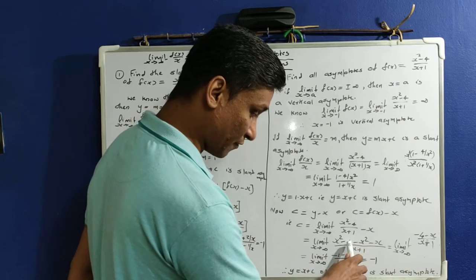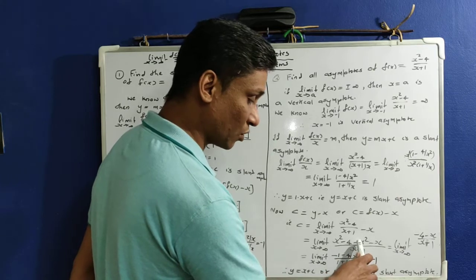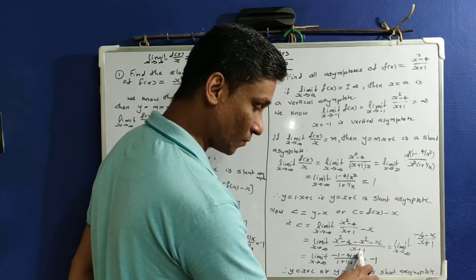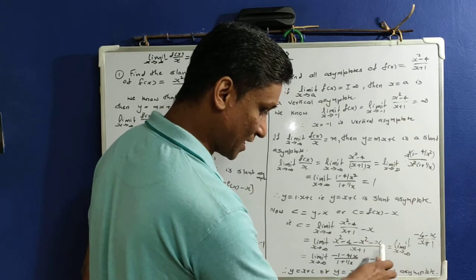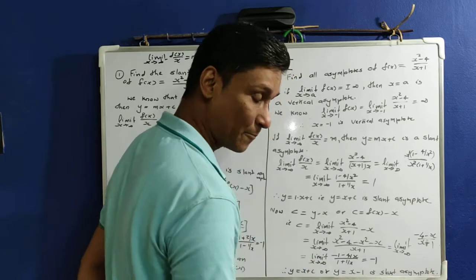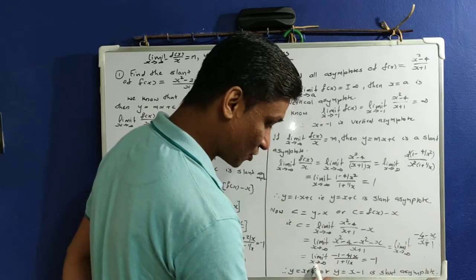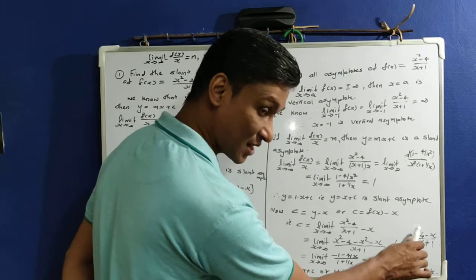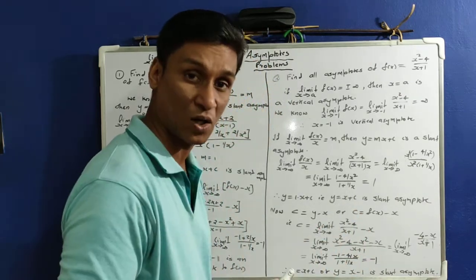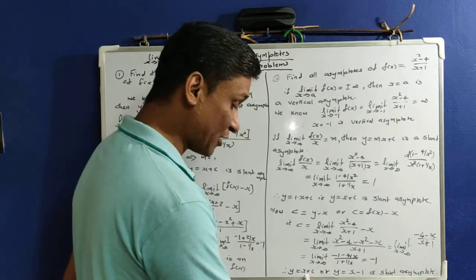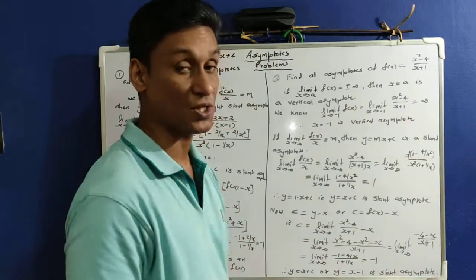Cross multiplying: c = limit as x tends to infinity of (x² − 4 − x(x + 1)) / (x + 1) = limit of (x² − 4 − x² − x) / (x + 1) = limit of (−4 − x) / (x + 1). The x² terms cancel. Taking x outside: limit of (−1 − 4/x) / (1 + 1/x), which equals −1. So c = −1, and y = x − 1 is a slant asymptote for this function.